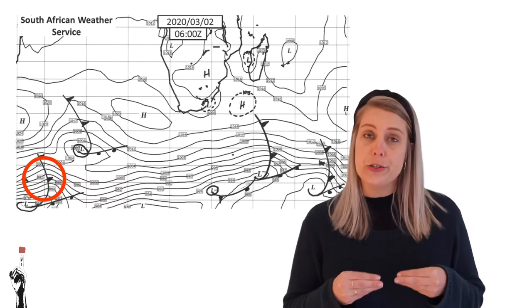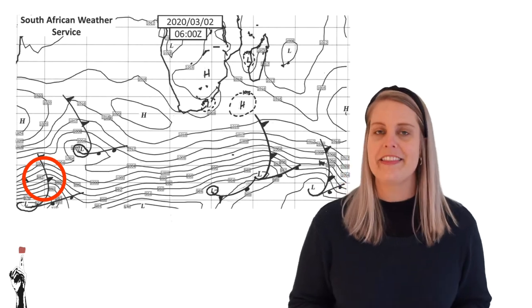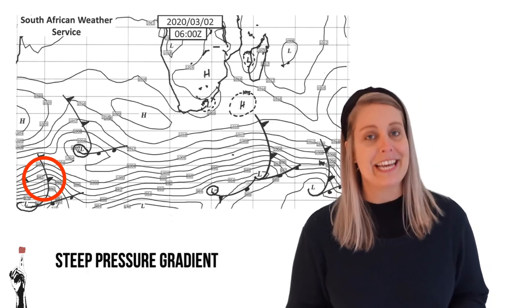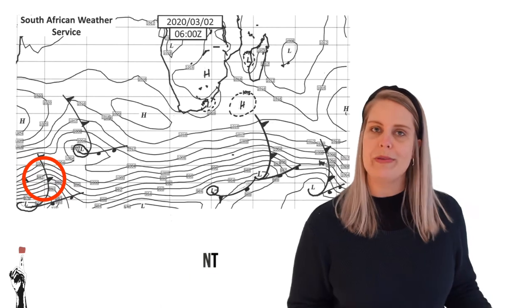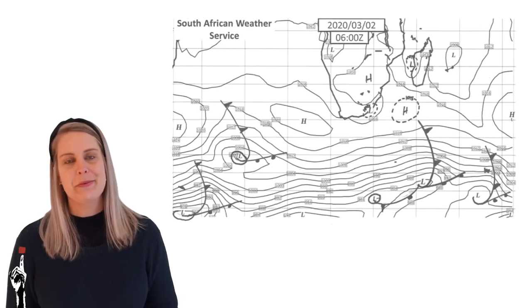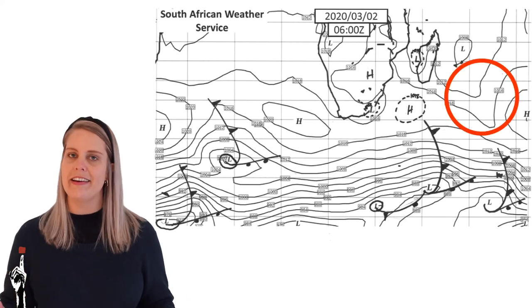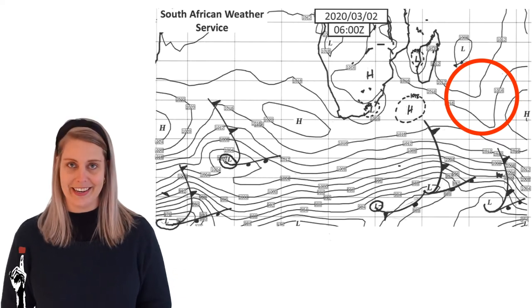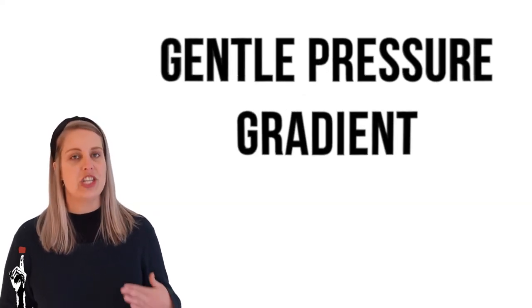When isobars are close together, this means that a steep pressure gradient is being experienced. This also means that very strong winds will be experienced at this point. Similarly, when isobars are more evenly spaced apart from one another, a light breeze or a gentle wind will be experienced. We say that this is a gentle pressure gradient. So simply by looking at the spread of the isobars, we are able to tell a lot about what is happening in the atmosphere.